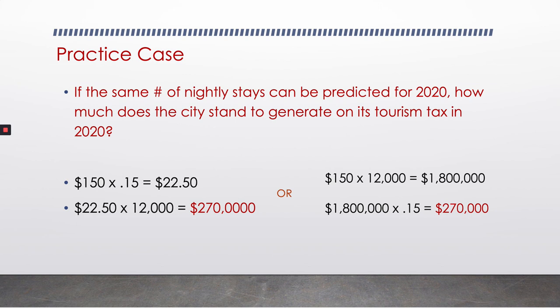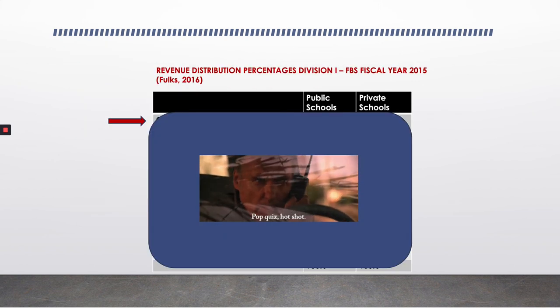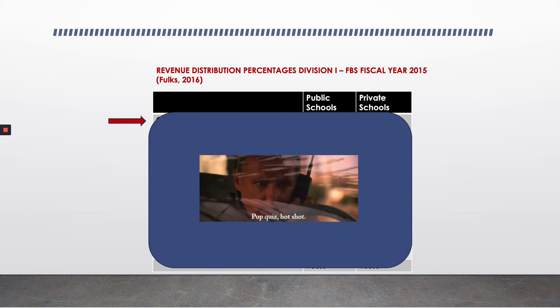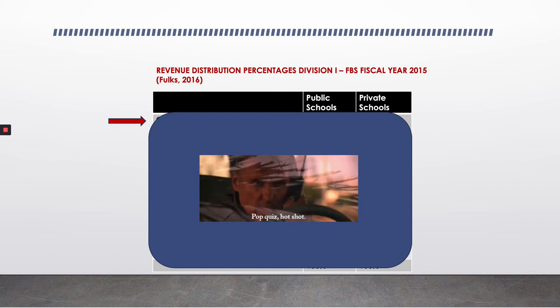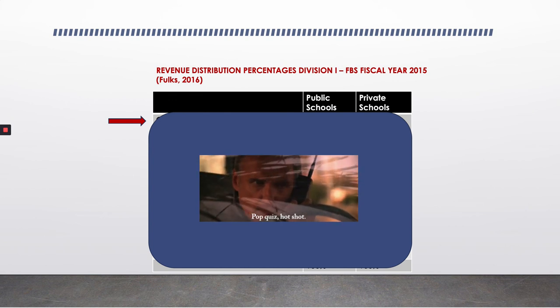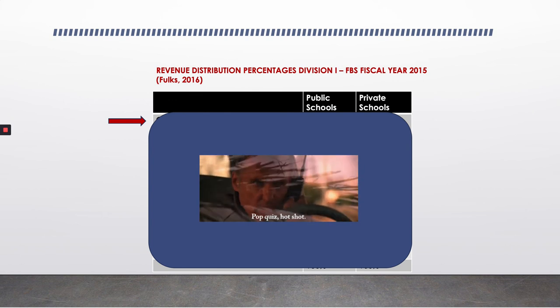I start with these easier practice cases to get us in the habit of properly using percentages when multiplying and properly showing work. This probably feels a little easy — which is meant to be. I want us to have a basic understanding of how I want you to calculate problems when given these issues, so make sure you're showing work like we've done in this practice case on future cases. Before we move on to the next category of revenue, I want to do a little pop quiz. What do you think the number one line of revenue is for Division I FBS schools?